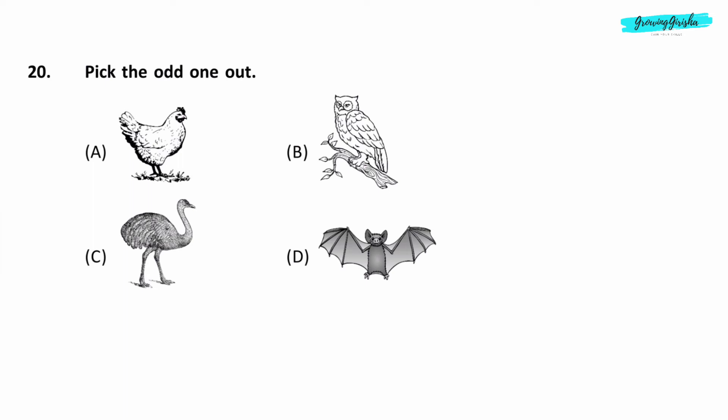Question 20. Pick the odd one out. Option D. Bat.